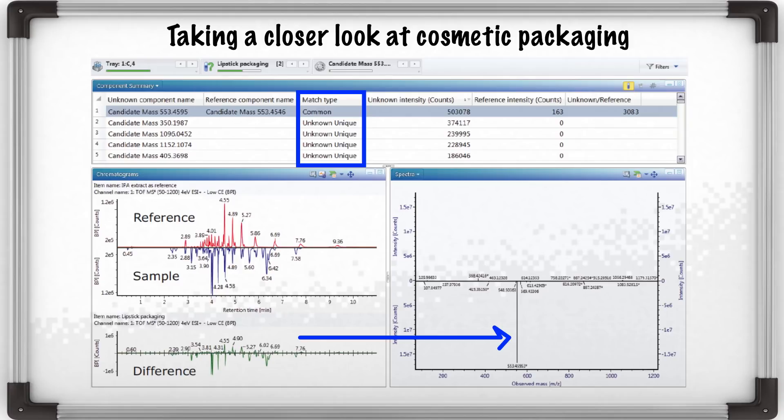In addition to that, the match type which is highlighted in the blue box is highlighting if the candidate is present only in your unknown sample, which is referred to as unknown unique, or it may be present in your reference sample which may be tagged as reference unique, or if it is present both in your reference and your sample, then it would be tagged as common unique. The other aspect here is the unknown reference ratio which basically indicates and quickly allows the user to identify common extractables. A response ratio of over 3,000 would indicate the presence of an unknown impurity.